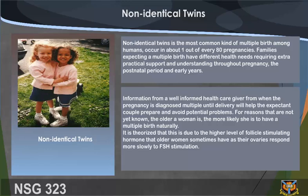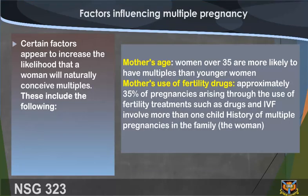Families expecting a multiple birth have different health needs, requiring extra practical support and understanding throughout pregnancy, the postnatal period, and early years. Information from a well-informed health caregiver, from when the multiple pregnancy is diagnosed until delivery, will help the expectant couple prepare and avoid potential problems. For reasons not yet fully known, the older a woman is, the more likely she is to have a multiple birth naturally. It is theorized this is due to higher levels of follicle-stimulating hormone in older women.